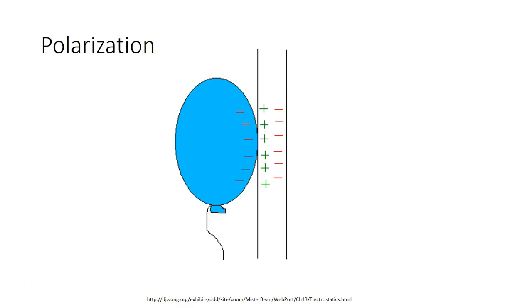Polarization is a process of separating opposite charges within a neutral object. Polarization is not really charging an object — it's just separating the protons and the electrons. Notice in the picture that the number of electrons and protons in the neutral object, meaning the wall, is still equal. The negatively charged balloon causes the electrons in the wall to move away, because electrons don't want to be next to each other. Once the balloon is taken away, the electrons move back closer to the protons and everything goes back to normal.